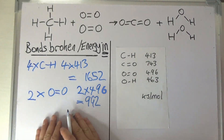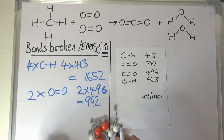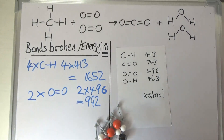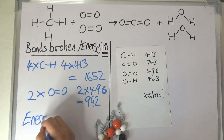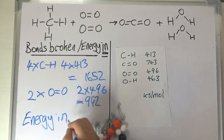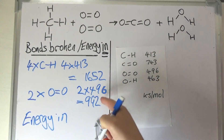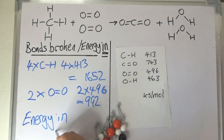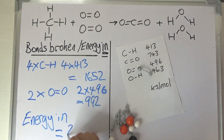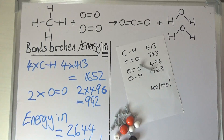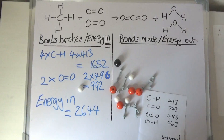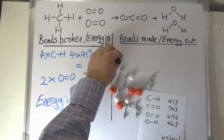So in total, the total amount of energy we need to put in to break apart all of those reactant molecules — the energy in — is 1,652 plus 992, and that comes to 2,644 kilojoules per mole. That will be the first mark on our exam question. We then need to consider what happens when the products are formed.